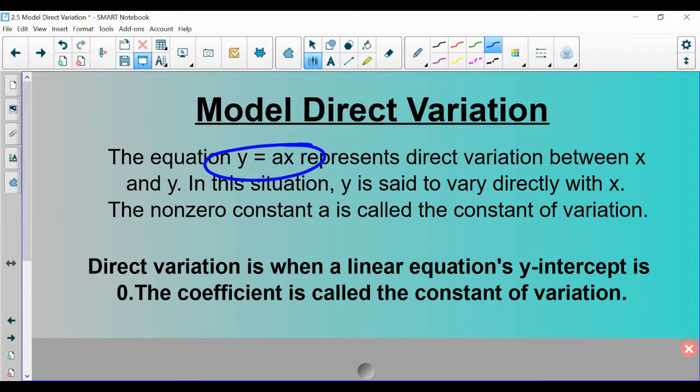So this is the book's definition up top. My definition would be it's direct variation when a linear equation's y-intercept is zero. So the place where it crosses the y-axis is right at the origin. Whatever the slope is, or the coefficient here, that value of a, is going to be called the constant of variation.